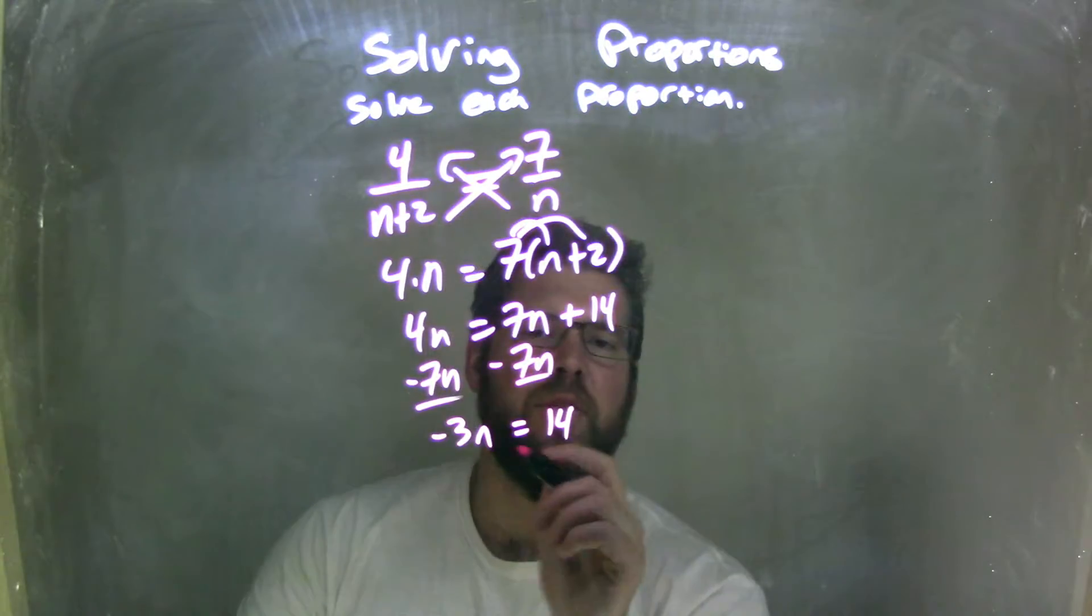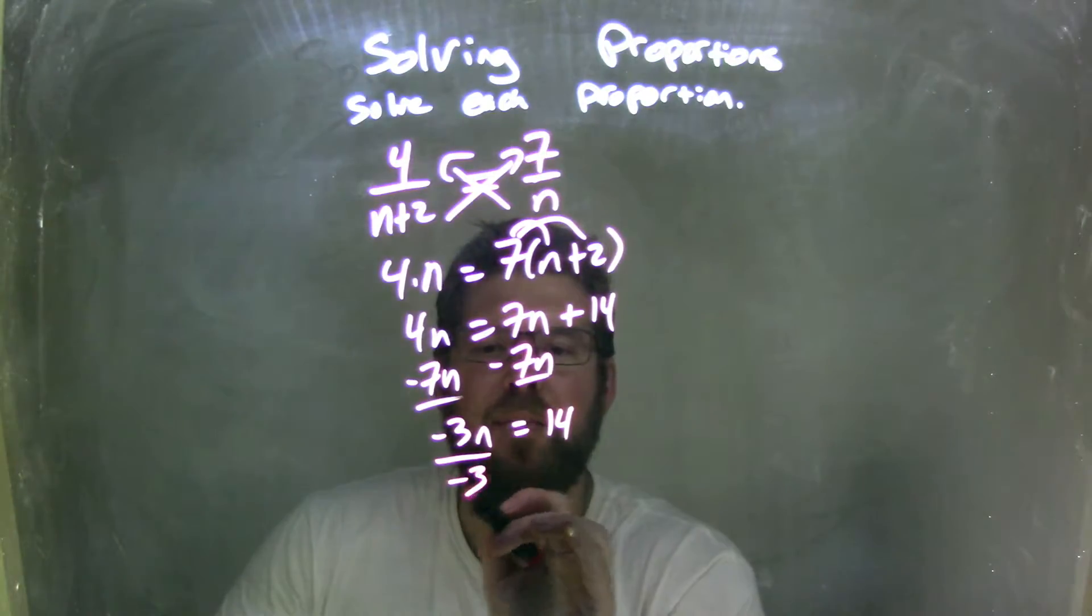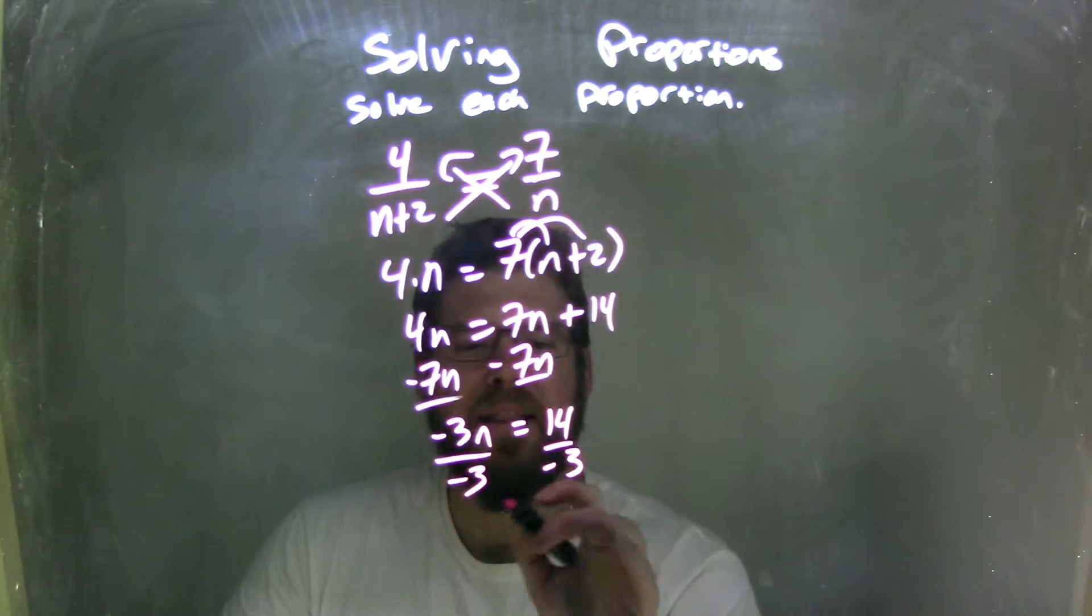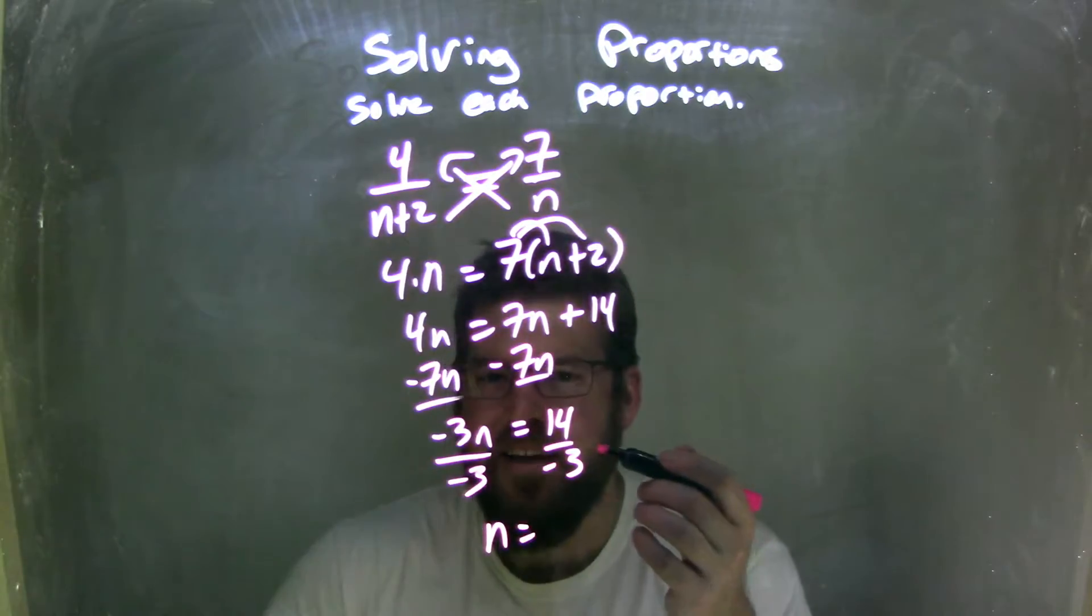I then need to divide by negative 3 on both sides, because the opposite of that multiplication is division. Divided by negative 3, leave me with n on the left equals 14 divided by negative 3.